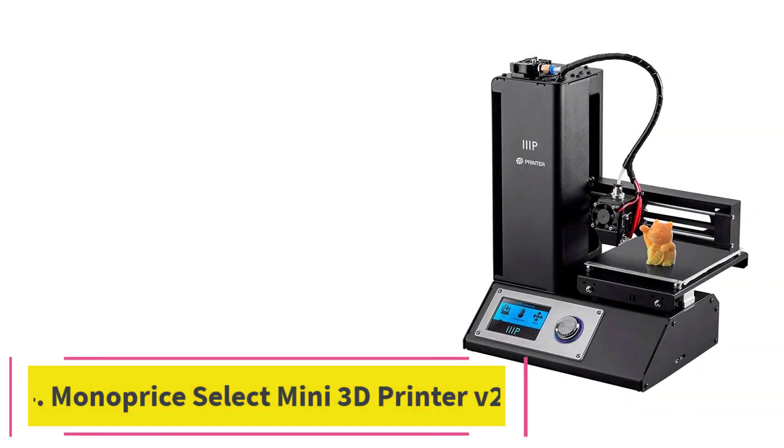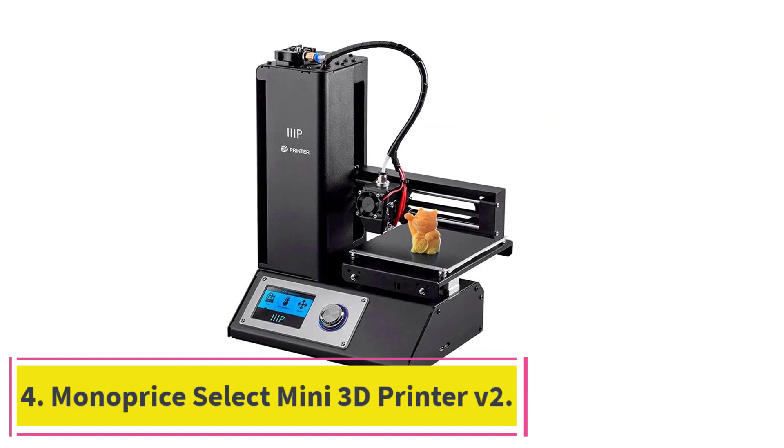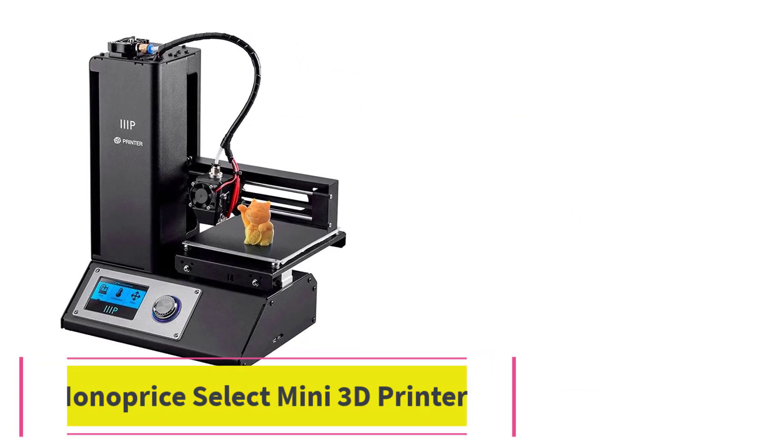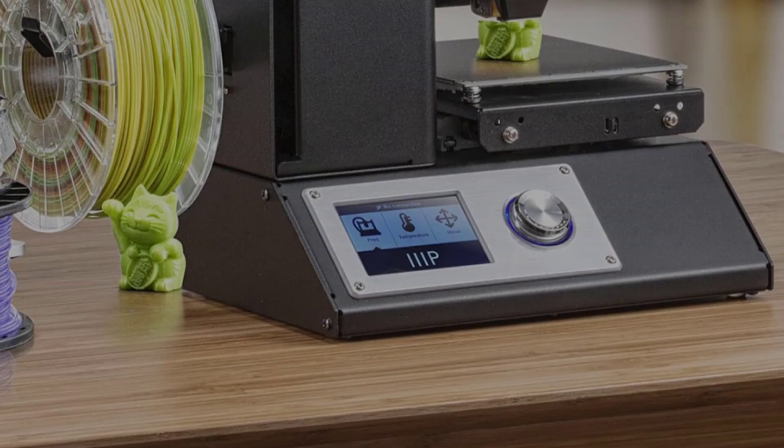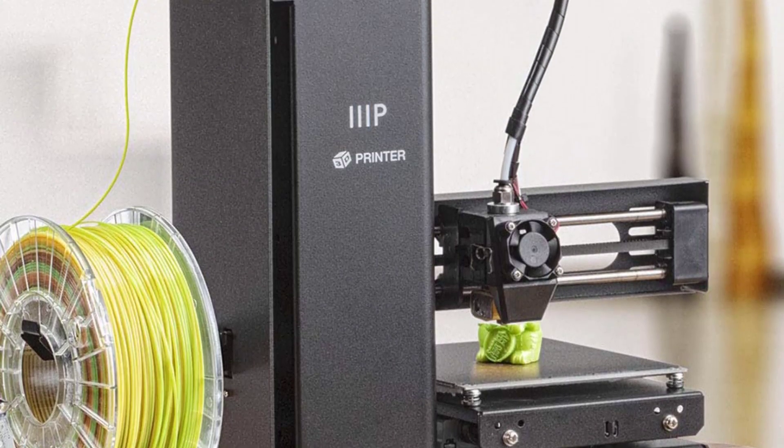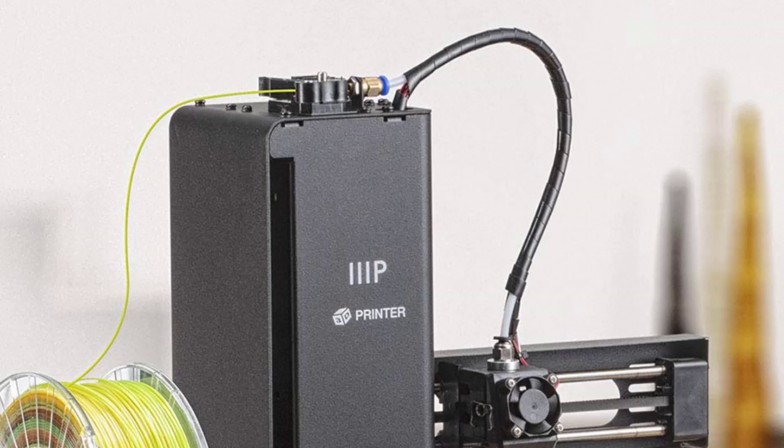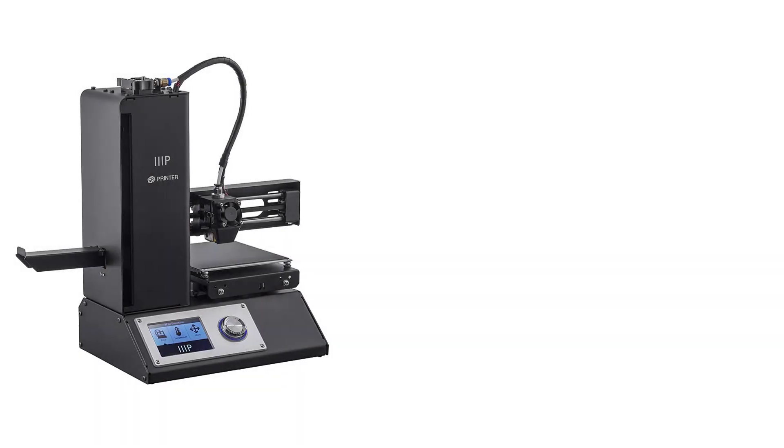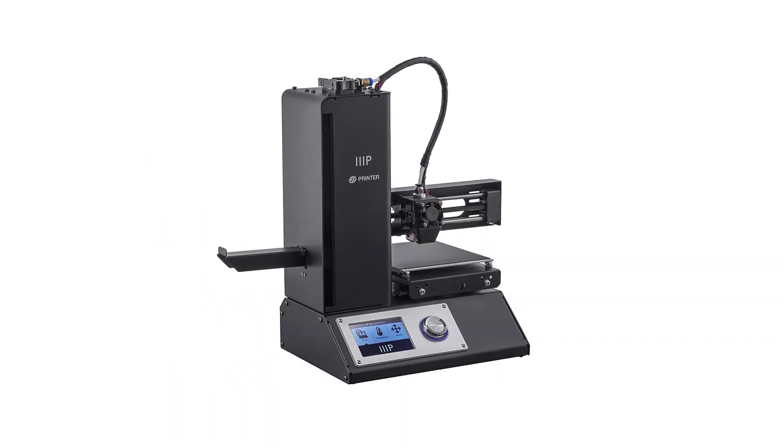At number 4. Monoprice Select Mini 3D Printer V2. Monoprice is a 3D printing bigwig, popular for top-of-the-line printers with solid sets of specs and features. The Select Mini V2 is one of their low-budget gems and it has all the bells and whistles you could ask for within its price range.